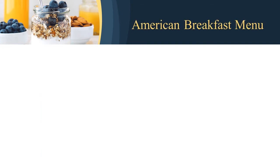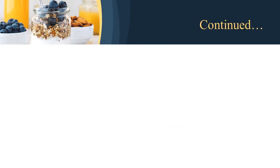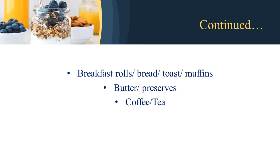American breakfast menu includes fruit juice, fresh fruit, breakfast cereals, eggs to order, ham, steak, and sausages served with grilled tomatoes, mushrooms, and potatoes. Pancakes, also called waffles, with syrup and honey can also be served. We will also serve breakfast rolls, bread, toast, muffins, butter and preserves, with the option of coffee or tea.